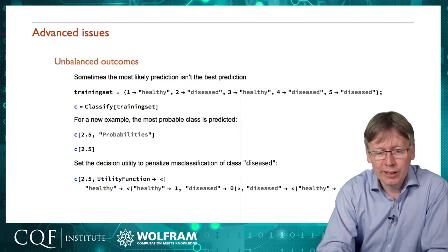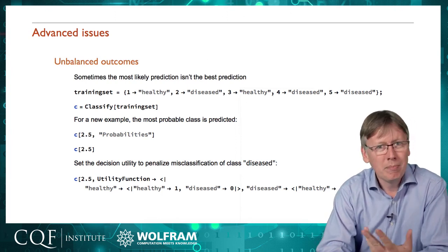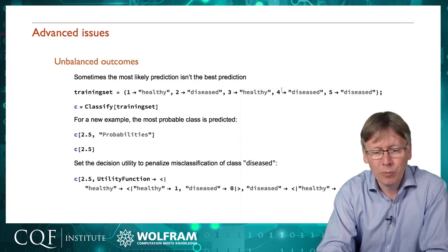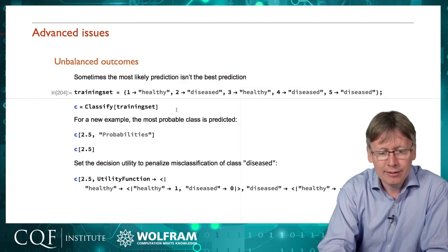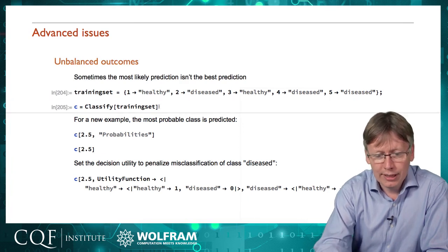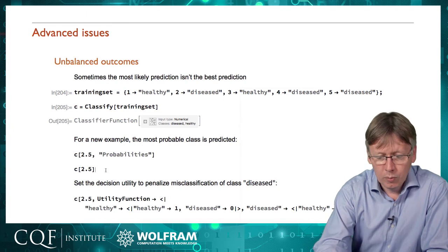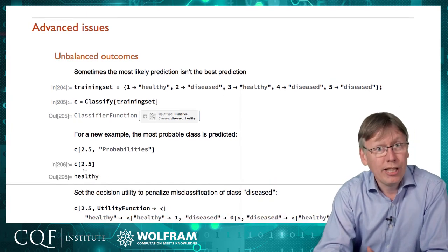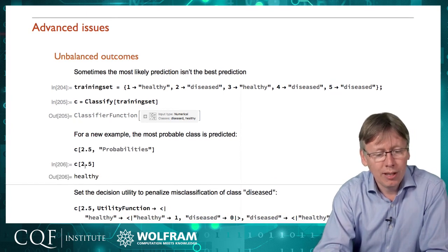So here's my toy example. I've got some inputs, some diagnostic measurement that gives numbers from one to five and anything from four above seems to suggest diseased. We'll put a classification on that and we'll ask it what to do, what prediction it's going to make for two and a half.